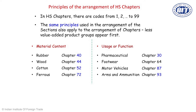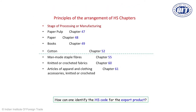Another way to identify a product in the HS spectrum is by usage or function. Suppose you are exporting footwear — even leather footwear does not appear under HS 42 like wallets or handbags. Footwear comes under HS 64. Motor vehicles come under HS 87. A third rule of thumb is stage of processing: paper pulp comes under HS 47, paper rims under HS 48, and books and magazines under HS 49 — following the less-processed to more-processed order.